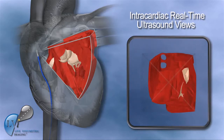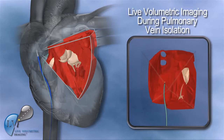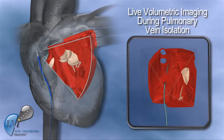One application for LVI technology is in the treatment of atrial fibrillation, a common cardiac arrhythmia. During this procedure, a therapeutic ablation catheter is introduced into the right atrium. A puncture is made through the interatrial septum to advance the catheter into the left atrium and contact the heart wall around the pulmonary veins.